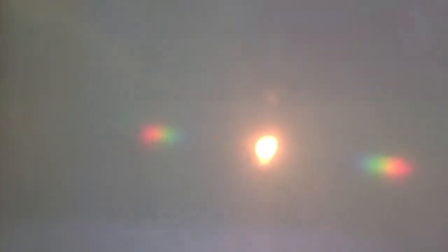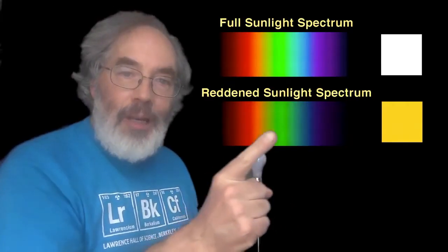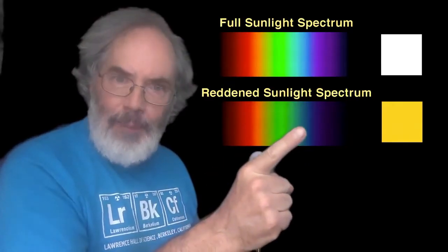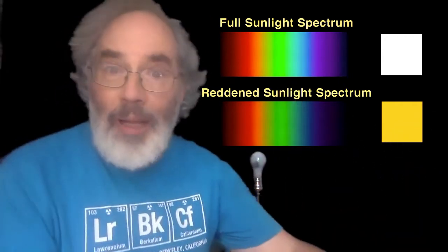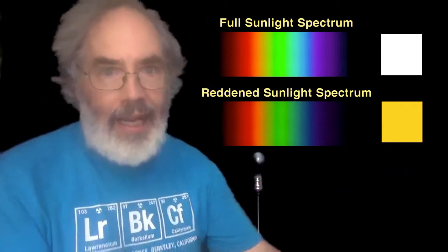I still see those collections of color on the right and the left, but the complete rainbow seems to be missing. I see red and orange and yellow, a little green, but the blue and violet is weak. This image represents the spectrum of light after it goes through the milky water — or the spectrum of sunlight after it goes through the smoky air.